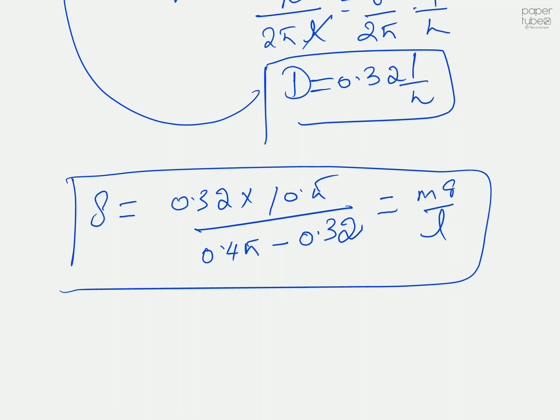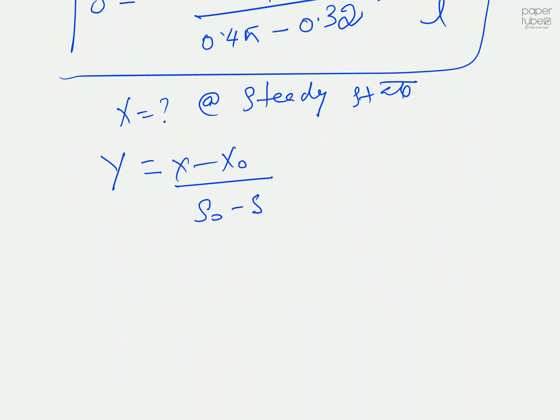You need to calculate your microbial concentration at steady state. You already derived the expression. Yield equals (x - x0)/(s0 - s). You have all these values. Yield is 0.48. I said sterile feed, which means x0 is 0. So x minus 0 divided by your initial concentration 2000.